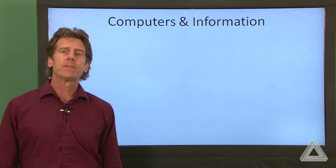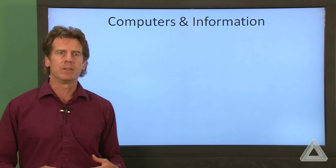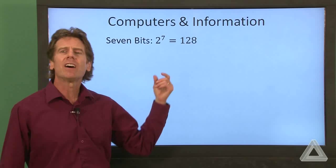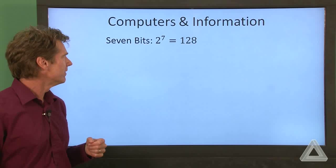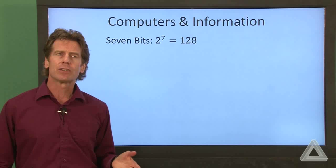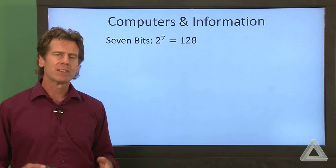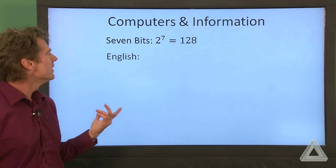Now, instead of considering what we could do with 32 bits and over four billion combinations, let's consider seven bits. So we have 128 unique combinations that we could have. Now, let's think in terms of English. We want to write something in English. So how do we do that? What do we need to have at our disposal?